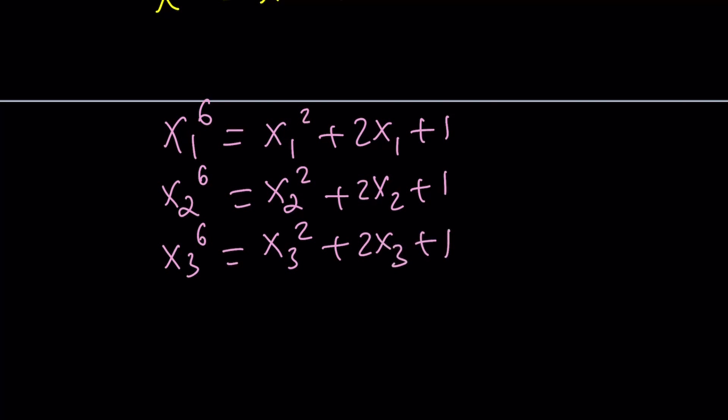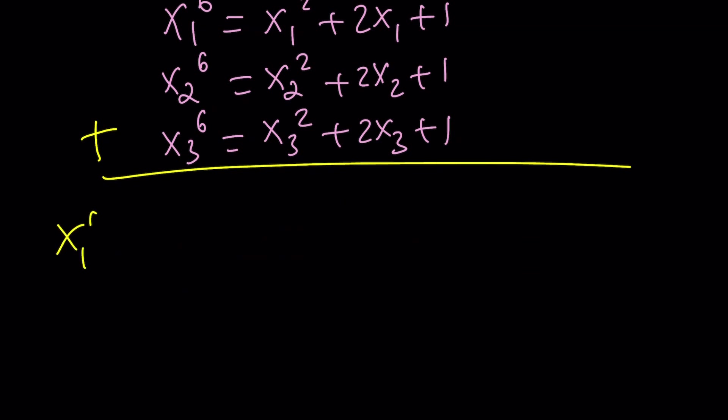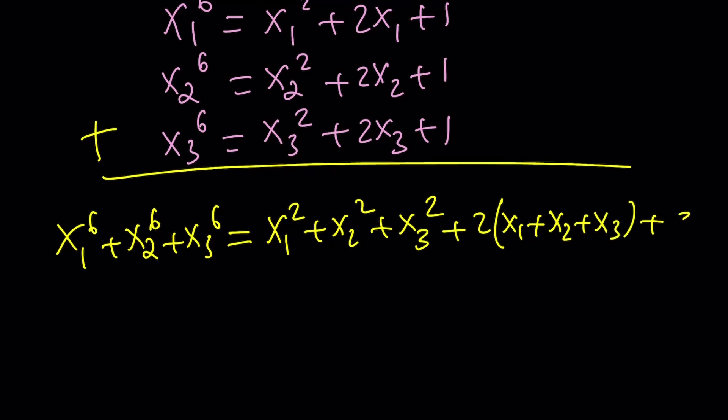And guess what we're going to do next? Add these up, right? Of course, that's what we want. x1 to the sixth, x2 to the sixth, x3 to the sixth. Cool. The sum of squares. And then two times the sum, because you can factor out, plus number three. Easy, right? So all we have to do is basically find this and find that for this equation. We do have a formula for the second one.